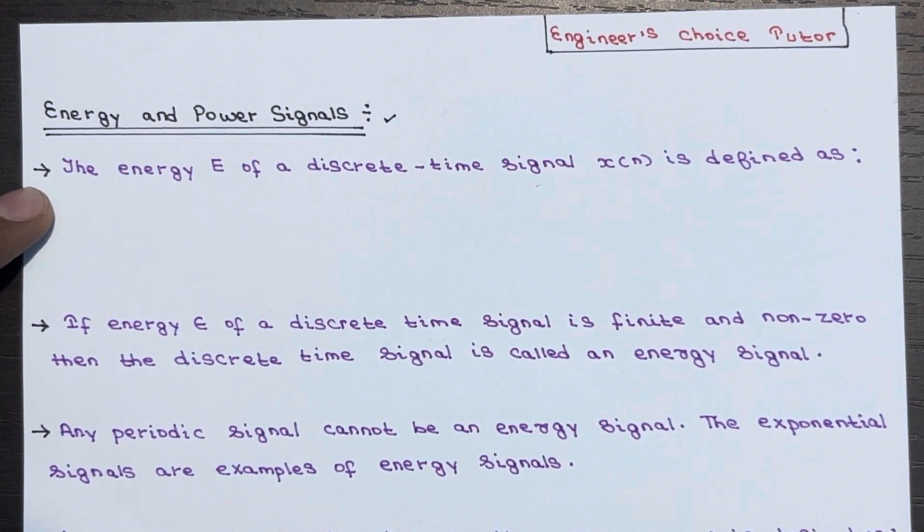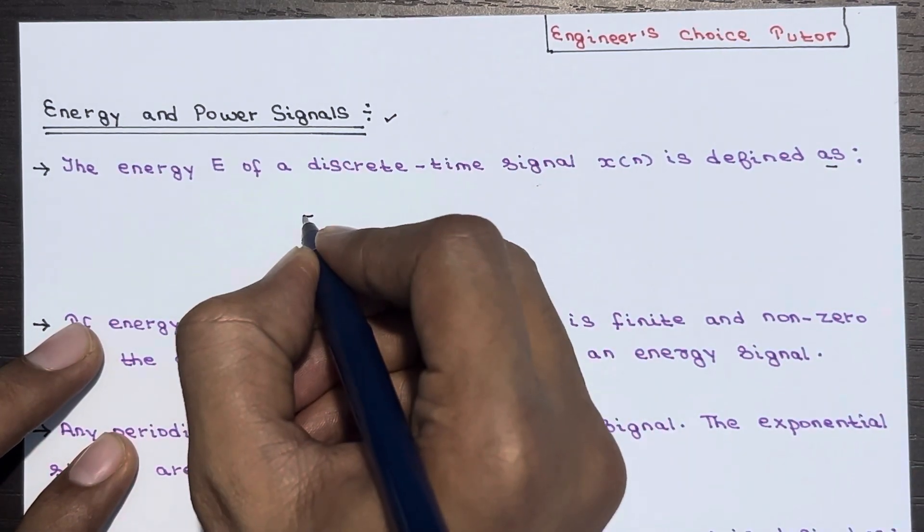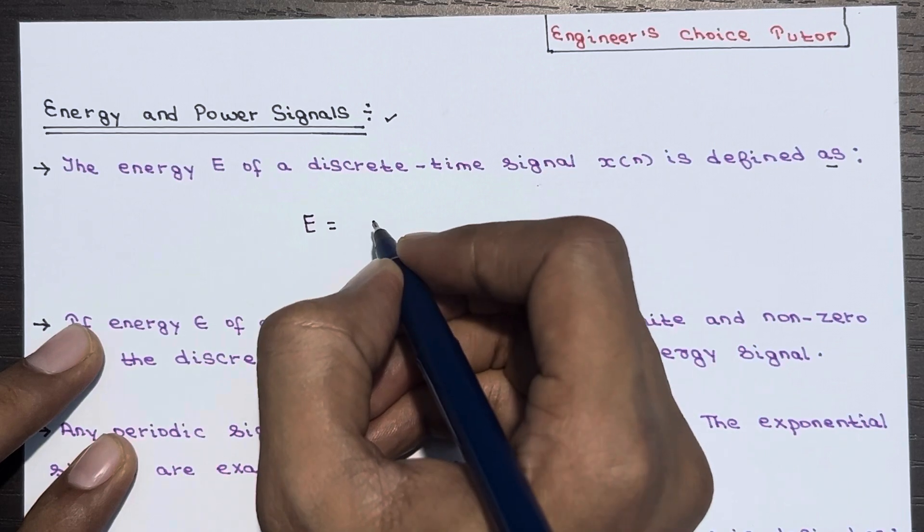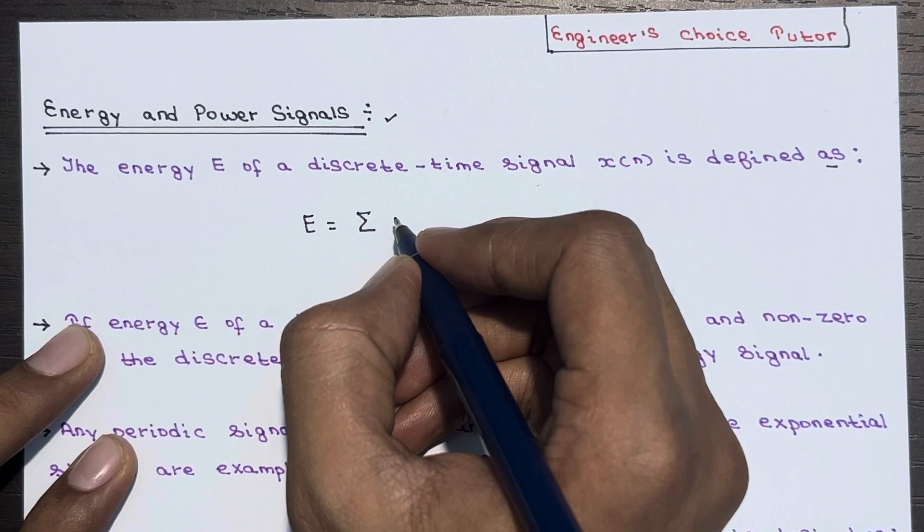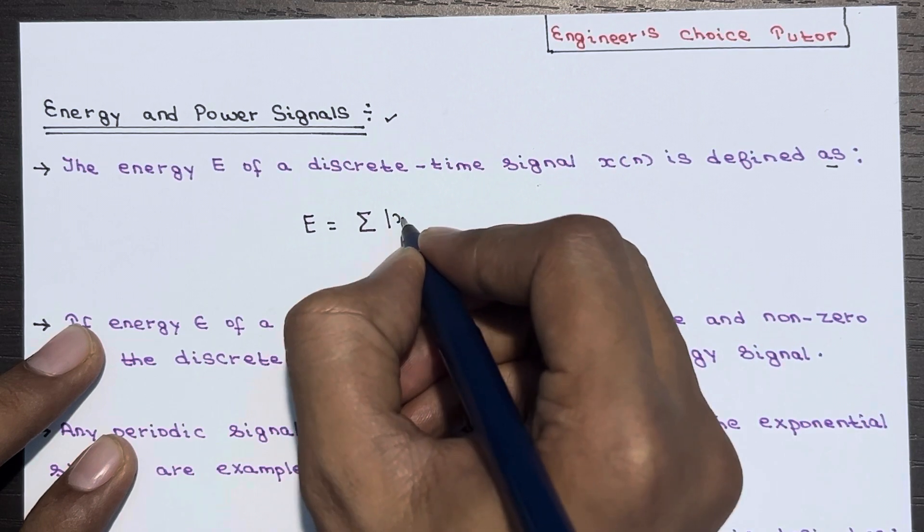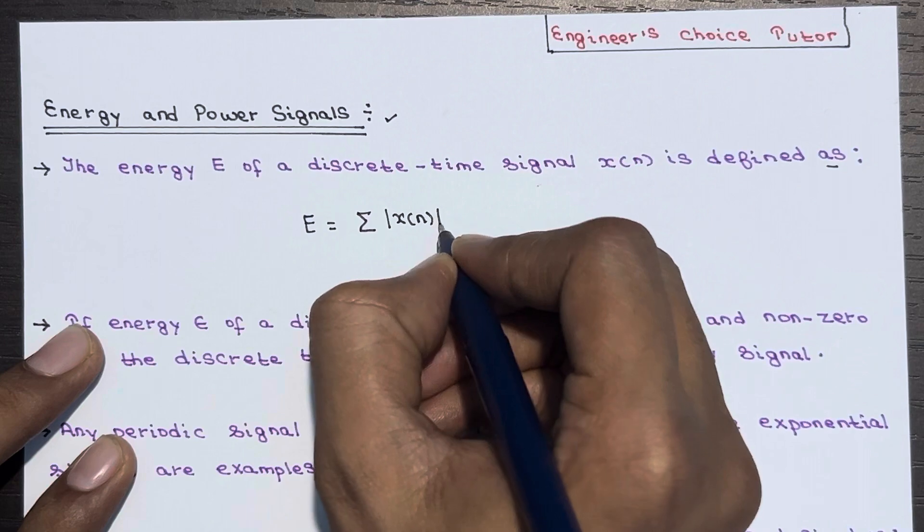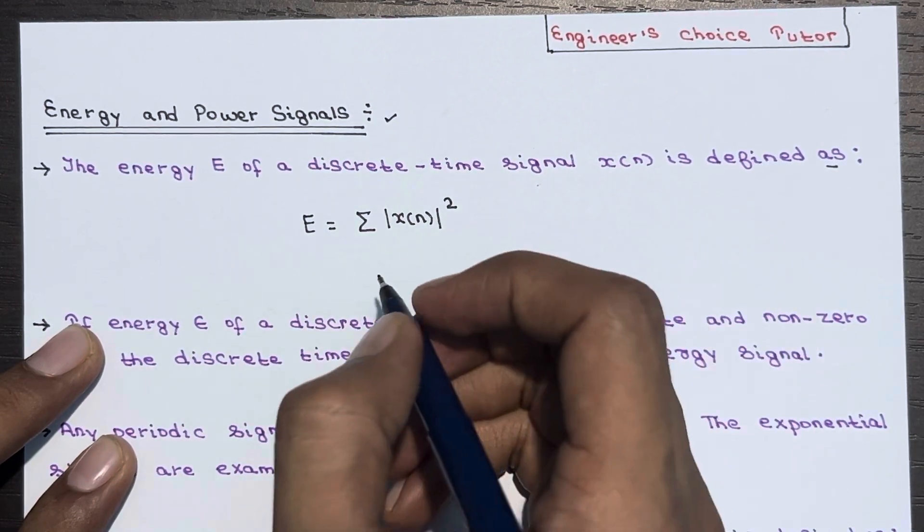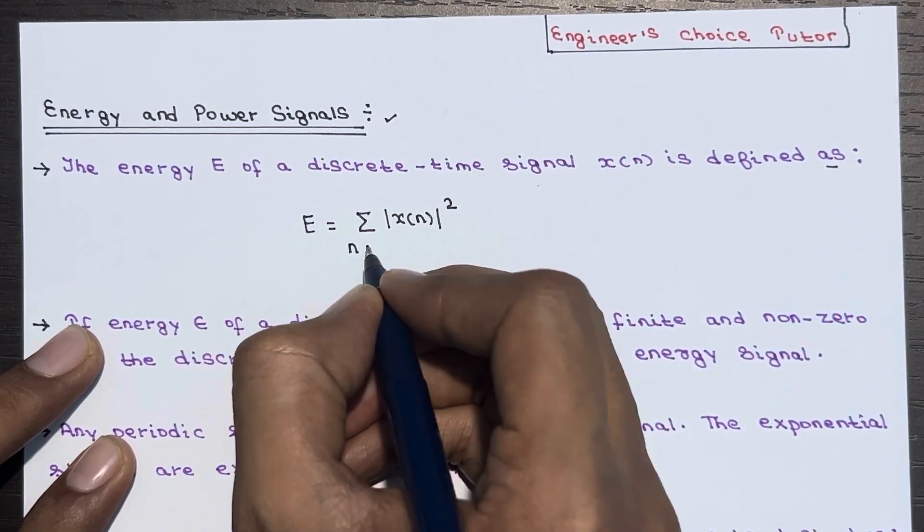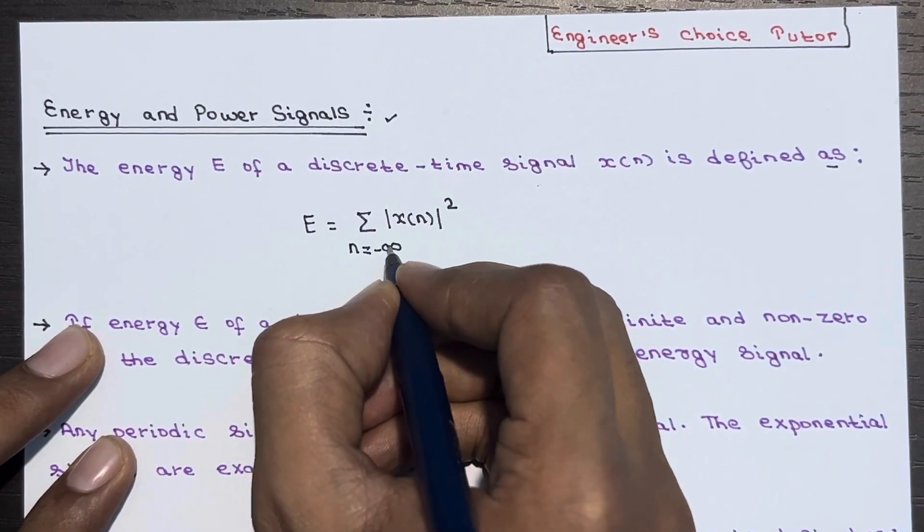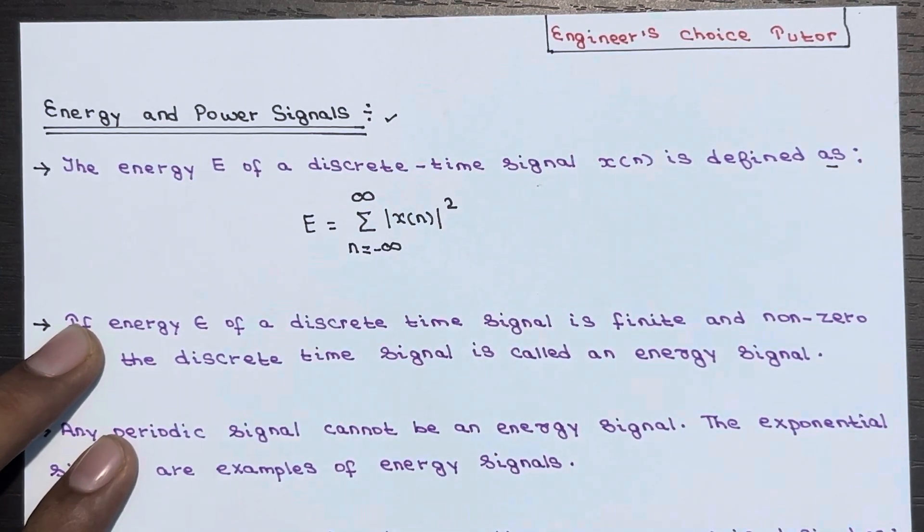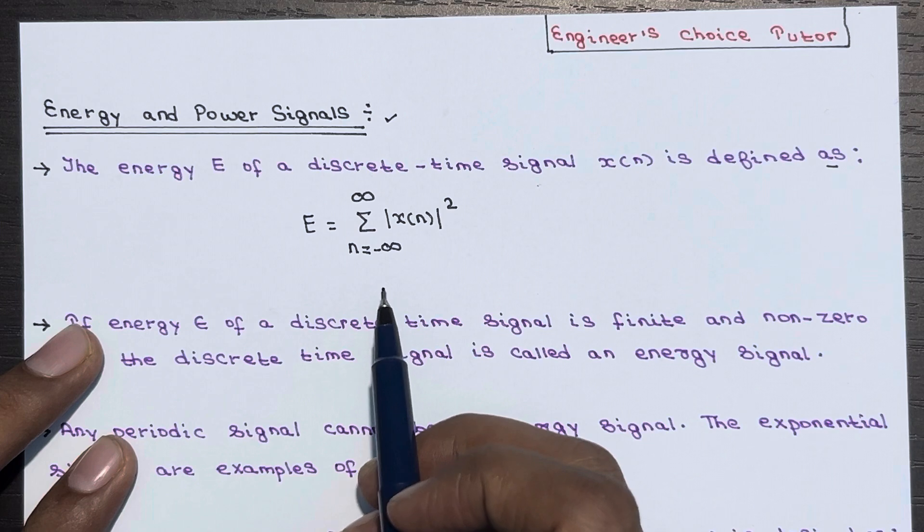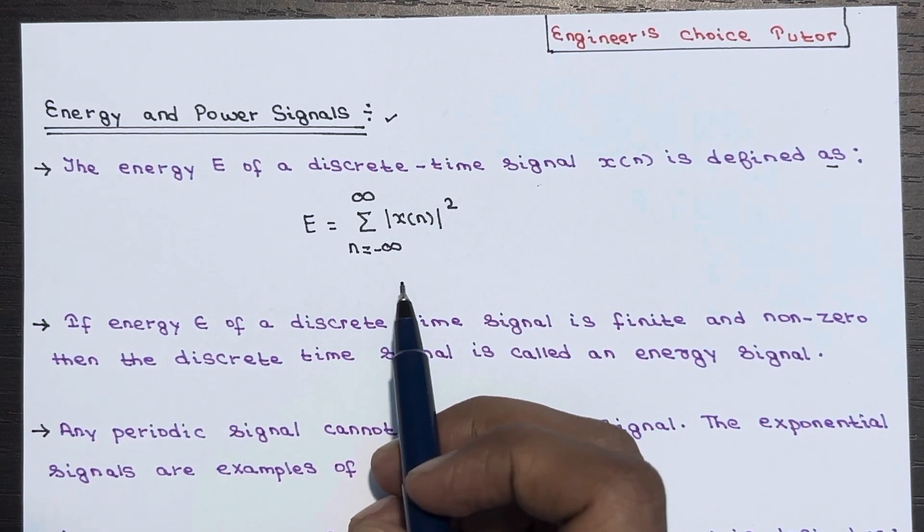E equals the summation of absolute square of x(n), where n ranges from minus infinity to plus infinity. This is how you define the energy E of a discrete-time signal x(n).